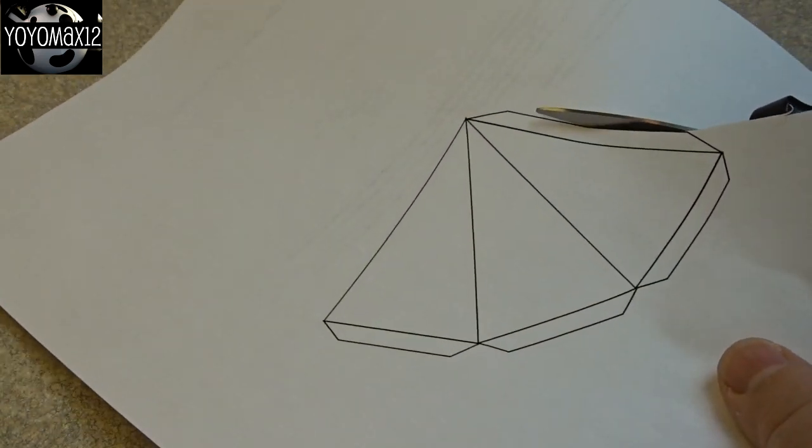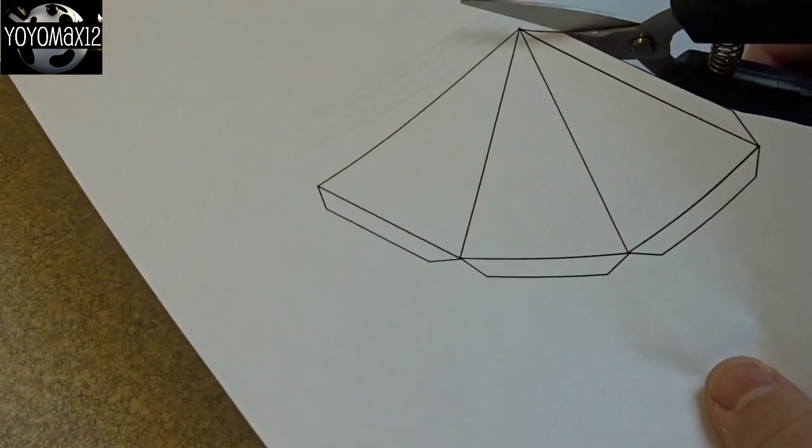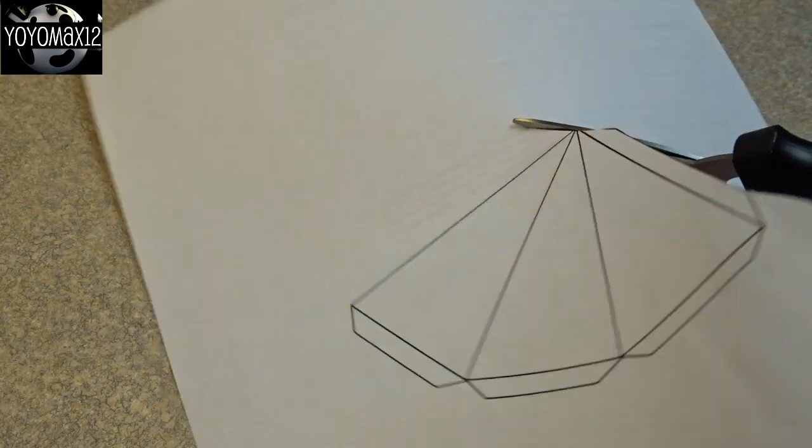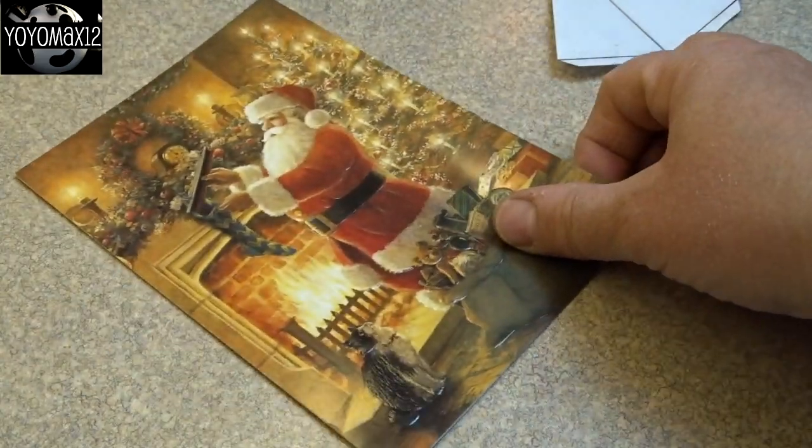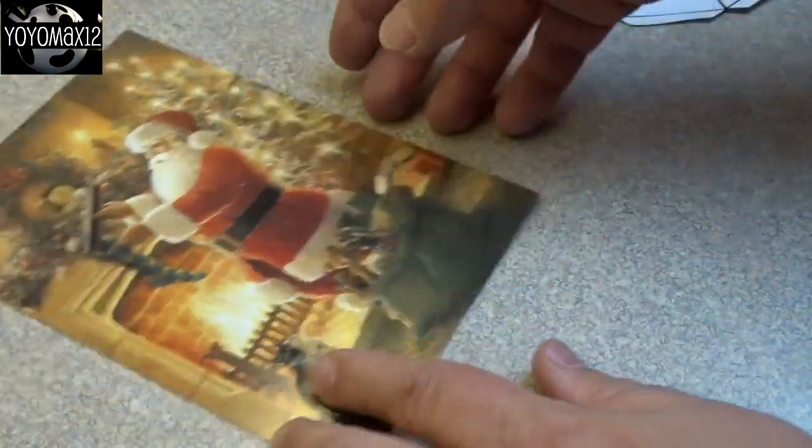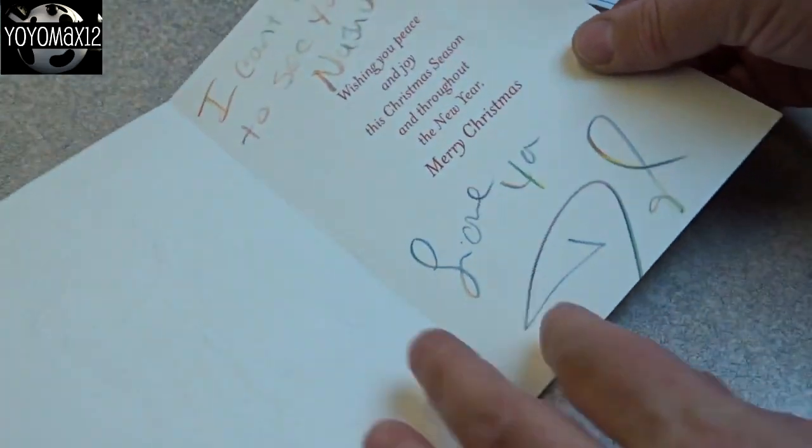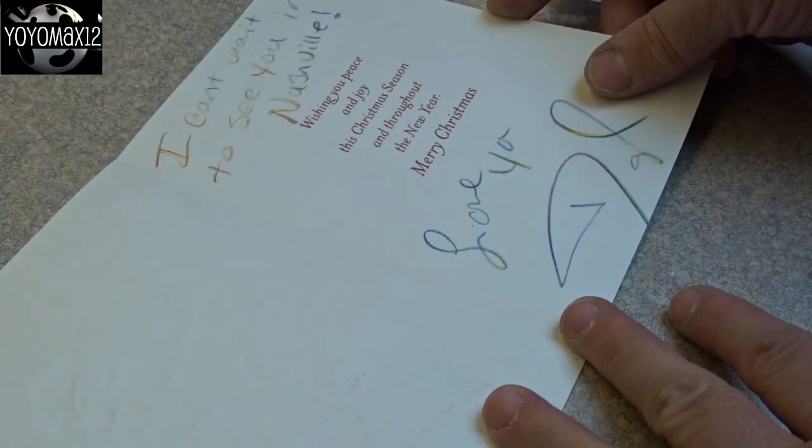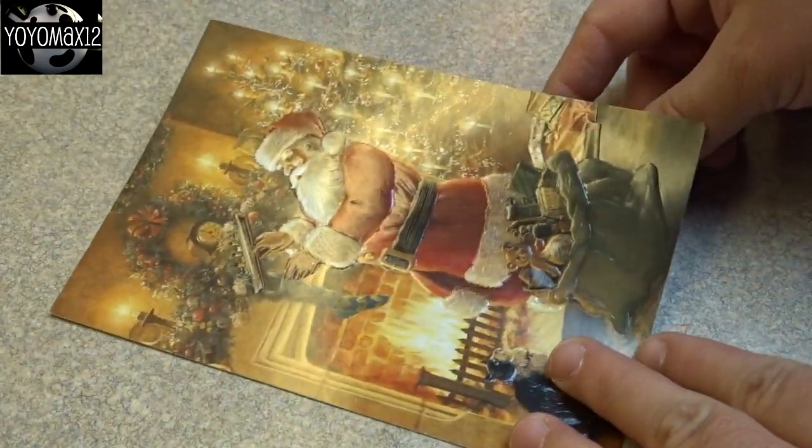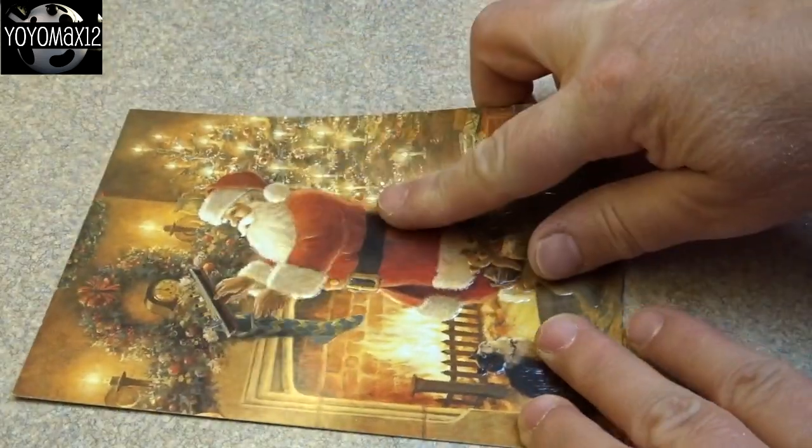This first one is for the star points. So I printed it out and then cut it out. Now you're going to need to trace it onto Christmas cards. You can use all the same Christmas card or I'm using a bunch of different Christmas cards. Here's one from my friend Daryl who's actually a YouTube friend and you may be able to get more than one star point from one card.